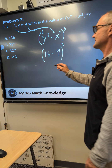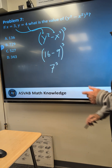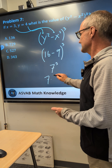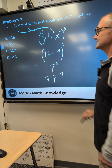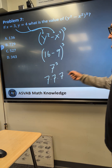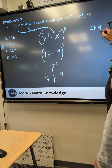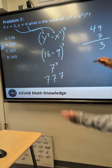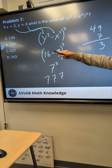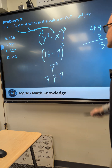16 minus 9 is 7 cubed, that means 7 times 7 times 7. 7 times 7 is 49, 49 times 7. 9 times 7 is 63 — I could stop right there, there's only one answer with a 3 at the end, so it's got to be that one.